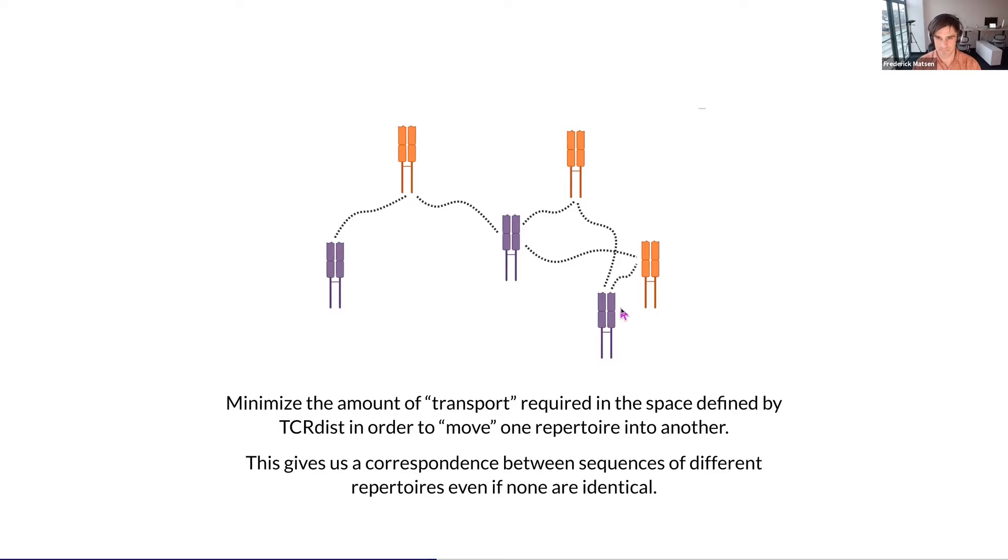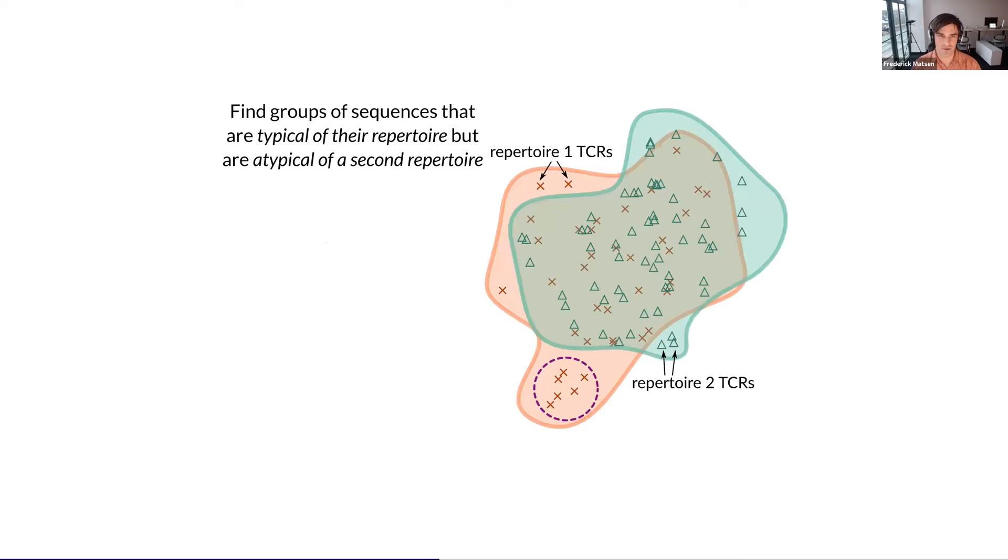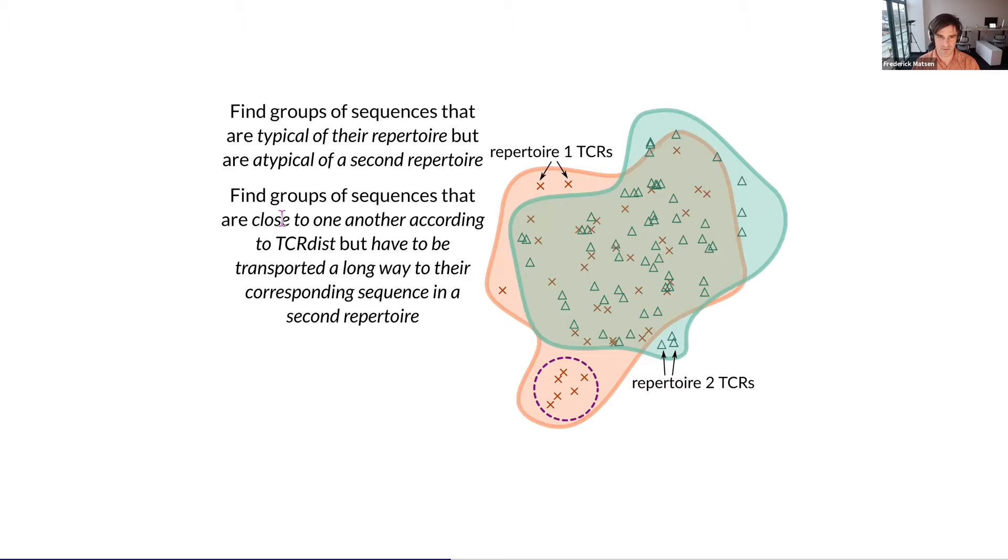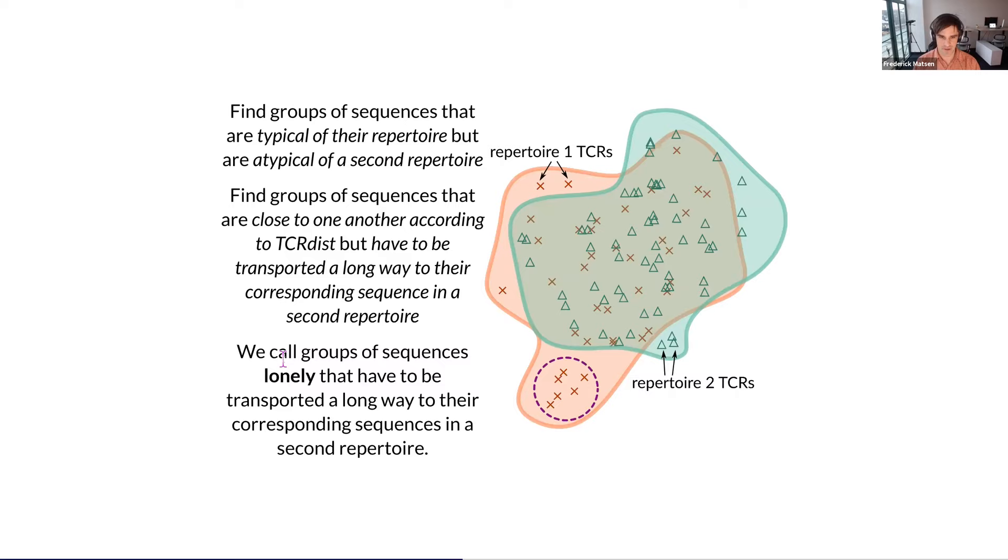Back to one of our goals, which is to find groups of sequences that are typical of their repertoire, but atypical of a second repertoire. We can phrase this now in terms of optimal transport by saying we're interested in finding groups of sequences that are close to one another according to the TCR dist, but have to be transported a long way to the corresponding sequence in a second repertoire. We're going to call groups of sequences lonely that have to be transported a long way to the corresponding sequences in a second repertoire. If we have a cluster of sequences, we can talk about the loneliness score, which is the sum of the distances that each one of the sequences have to transport to their corresponding sequences in the second repertoire.